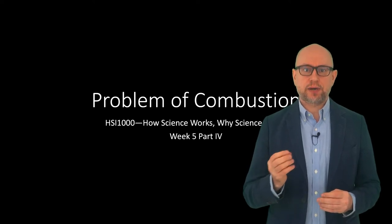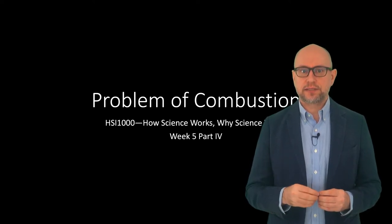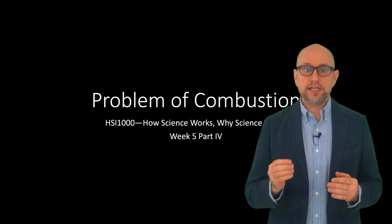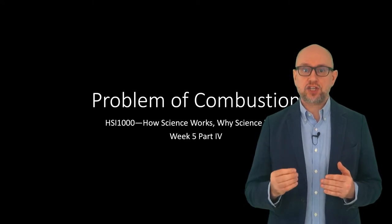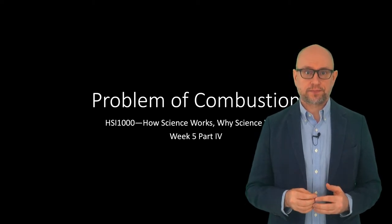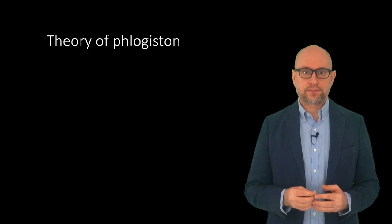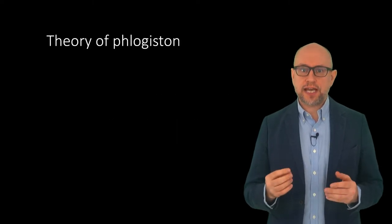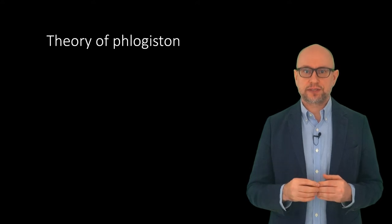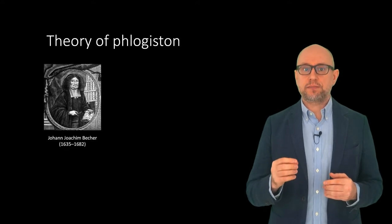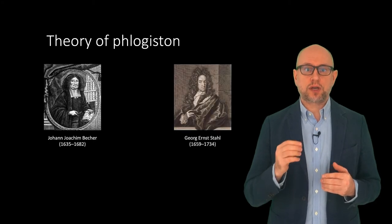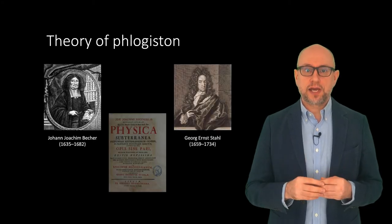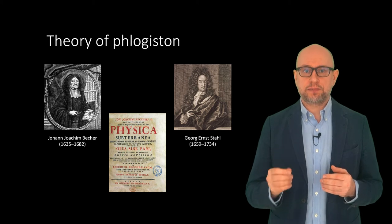Combustion was completely misunderstood by the alchemists and early chemists. It was known that air was needed to sustain combustion and to sustain life. It was also known that when a metal was heated in air, it changed and gained weight. One of the most famous attempts to explain combustion is due to two Germans: an alchemist by the name of Johann Joachim Becher and a chemist by the name of Jorg Ernst Stahl. They are credited with establishing the phlogiston theory for combustion.